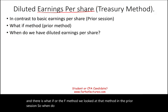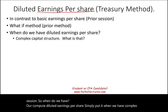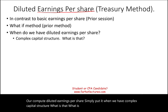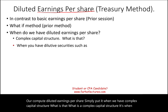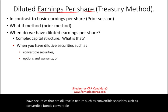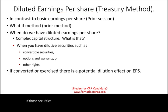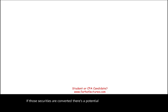So when do we have to compute diluted earnings per share? Simply put, it's when we have a complex capital structure. What is a complex capital structure? It's when you have securities that are dilutive in nature, such as convertible securities — convertible bonds, convertible preferred stock, options, warrants, or other rights that could be converted into common stock. If those securities are converted, there's a potential dilution effect on EPS.